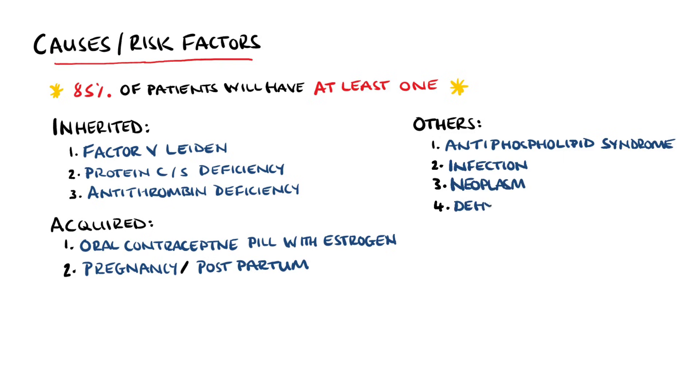Antiphospholipid syndrome has also been found to be a cause for cerebral venous sinus thrombosis. Others include infection, neoplasm, dehydration, chronic inflammatory conditions like Crohn's disease or ulcerative colitis, and even lupus. Anemia has also been identified as a risk factor, as has head trauma involving the sinuses.